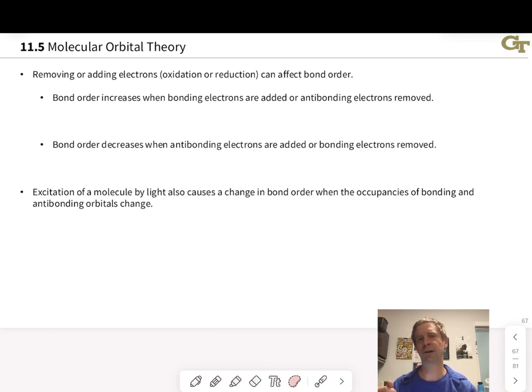Some general principles are laid out on this slide for how to think about this. Let's entertain the idea of a very simple molecular orbital situation, just with sigma and sigma star orbitals. We started like this, which is a bit of a nonsensical occupancy situation, but it's going to help us make our point. Bond order increases when we increase the number of bonding electrons.